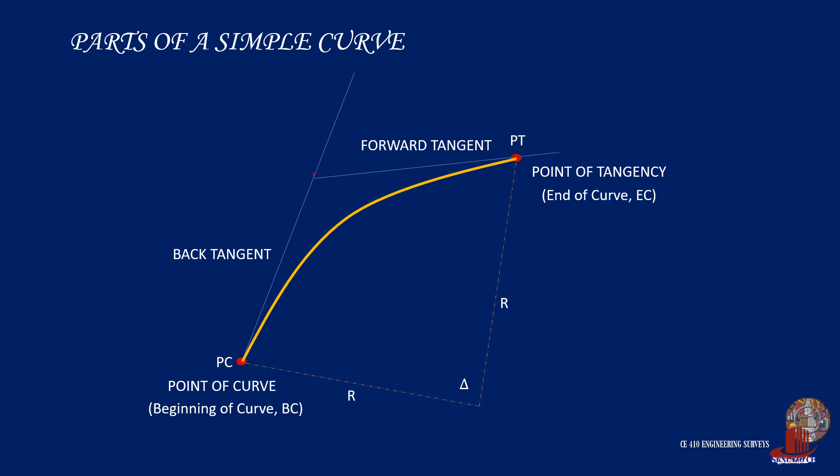Another point to consider is the point of intersection of the two tangents, which is coined as PI or also referred to as the vertex V. At this point, it may be noted that both the radius of the curve and the central angle have already been designed prior to the alignment of the curve.